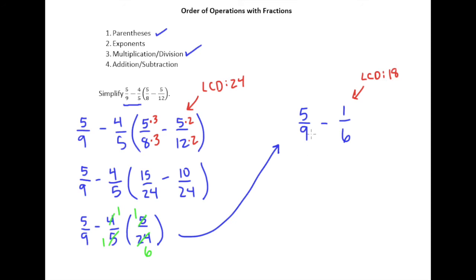So I need to multiply 9 by 2 to make 18, so I do that to the top and bottom of 5/9. Multiply 6 by 3, so I multiply 3 on the top and bottom of 1/6.